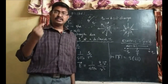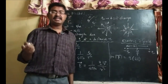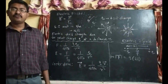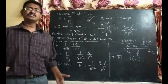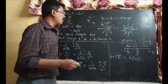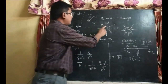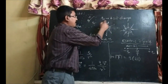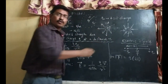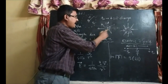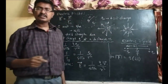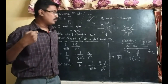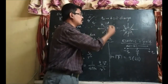Electric field strength is represented by electric field lines. These are imaginary lines. From a positive charge, the electric field lines emerge — they emanate from it, indicated by arrows. For negative charge bodies, the electric field lines will go towards it.